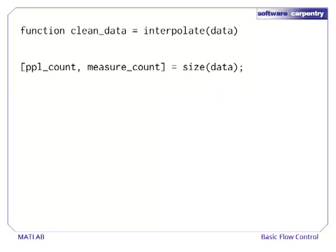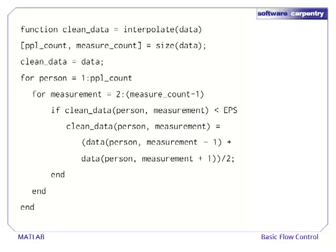In our interpolate function, we need to figure out what sizes to use for loops. These can be gotten from the size function, which returns the size of the array. We also make a copy of our data and call it clean data. Since this variable has the same name as our return variable, it will be automatically returned at the end of the function. Next, we loop through each person. For each person, we loop through each measurement except the first and last. Those need special treatment with linear interpolation, and we leave them to an exercise.